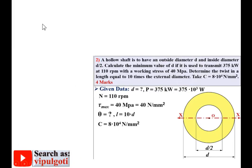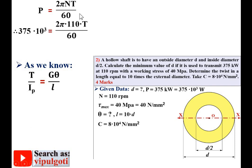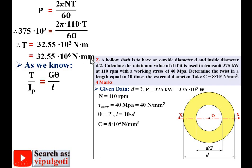Using the fundamental pure twisting equation T / Ip = G·θ / L. Since torque is not given, first find T from power: P = 2πNT / 60. Substituting P = 375 × 10³ and N = 110 rpm, calculate T in N·m, then convert to N·mm: T = 32.55 × 10⁶ N·mm.